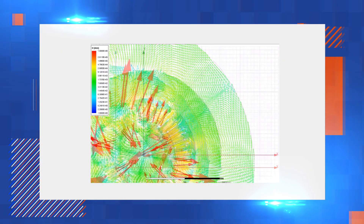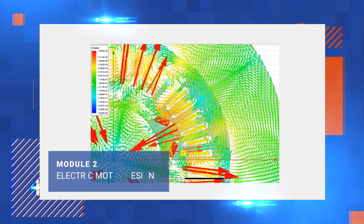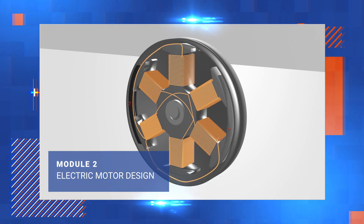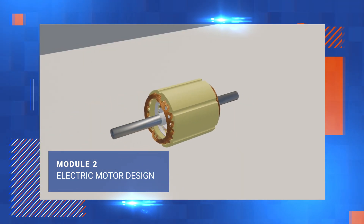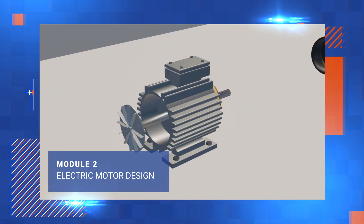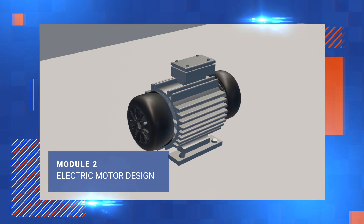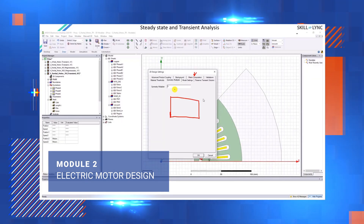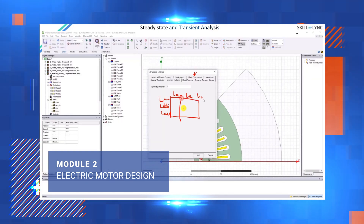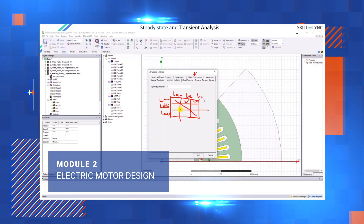In Module 2, you will learn how to design popular EV motors like brushless DC motors and permanent magnet synchronous motors using ANSYS. You will learn about mathematical modeling and properties of materials used in motors.